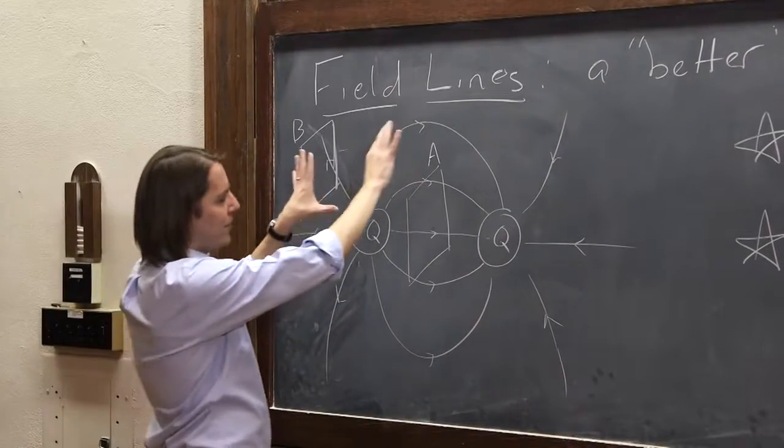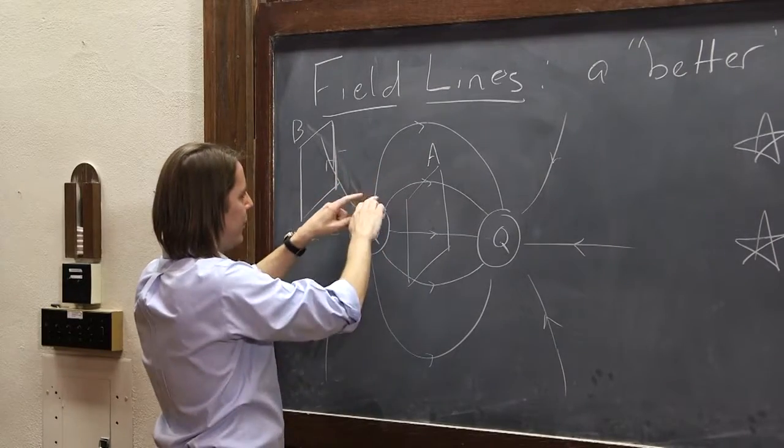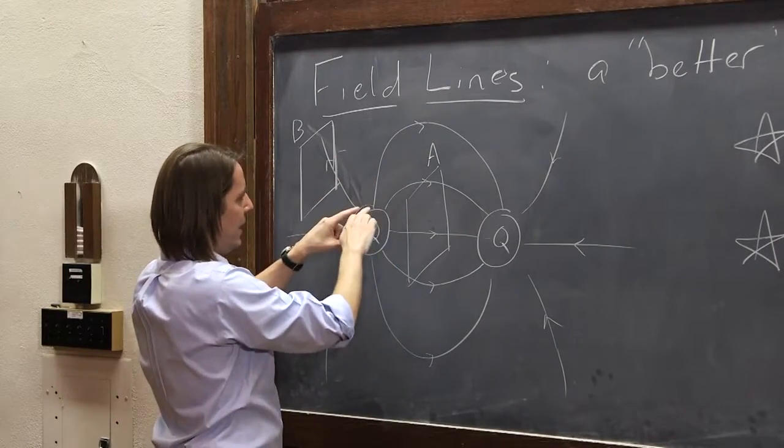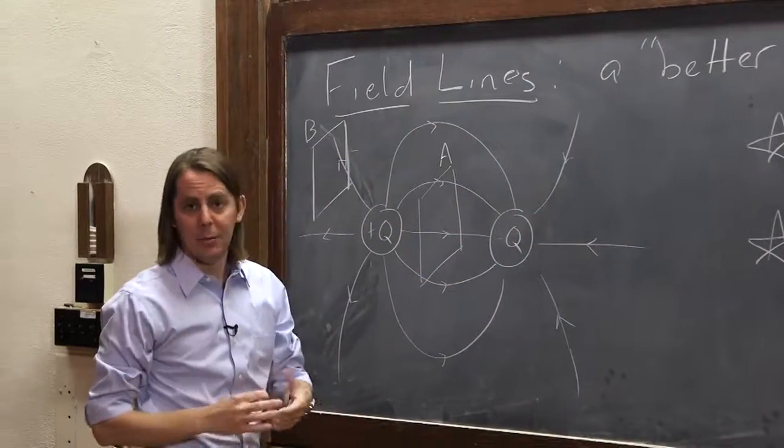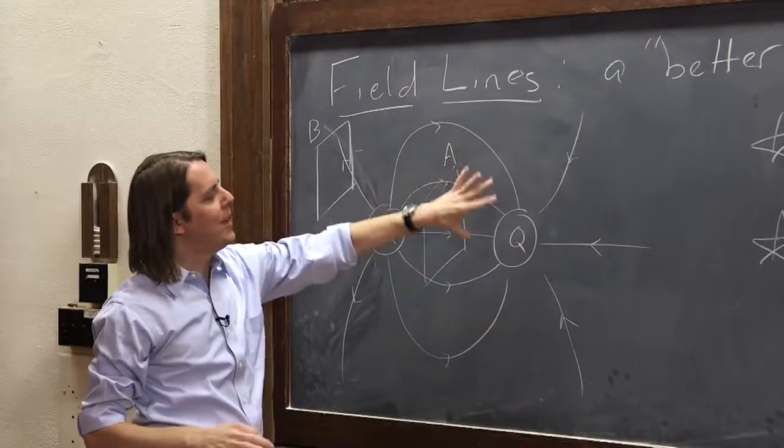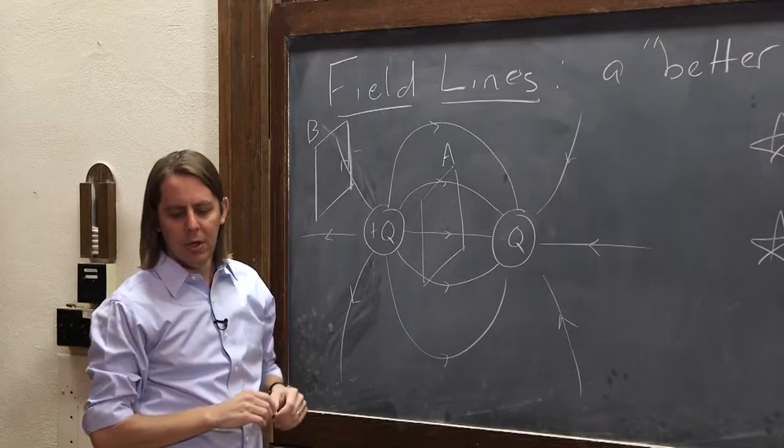So when you look at the field lines, you can tell the magnitude just by how many lines, how close are they together. The field is very strong right around a charge. It's very weak, really far from a charge, and it's somewhere in between the two charges. But they have a way to represent the magnitude really only at one place. It doesn't matter about vectors pointing all different directions.